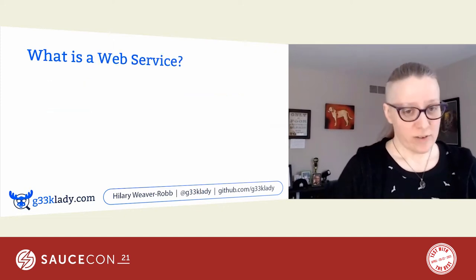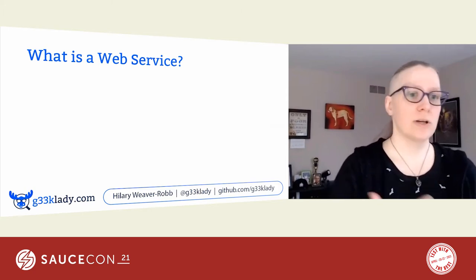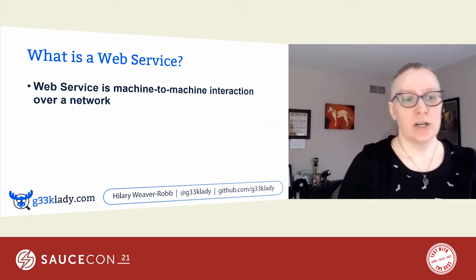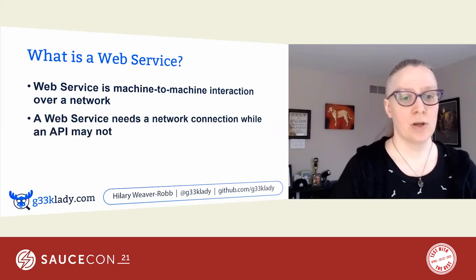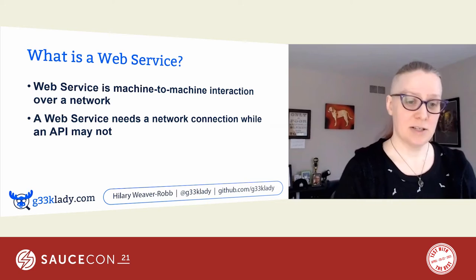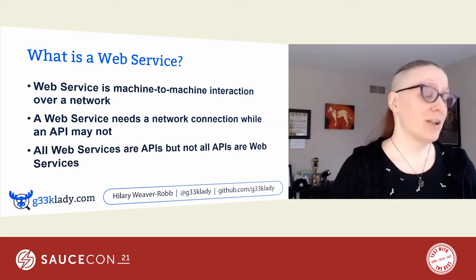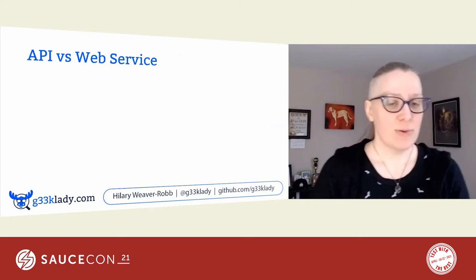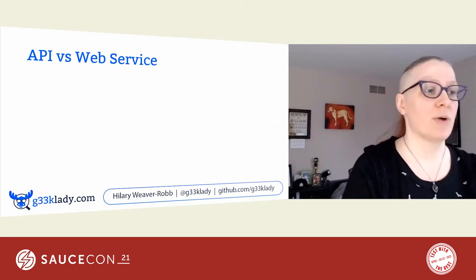So what is a web service? You may have heard 'web service' and 'API' both separately or interchangeably. A web service is machine-to-machine interaction over a network, such as HTTP. A web service needs a network connection while an API may not. All web services are APIs, but not all APIs are web services. Those APIs we mentioned earlier may or may not be web services — let's take a look at them and talk about why.